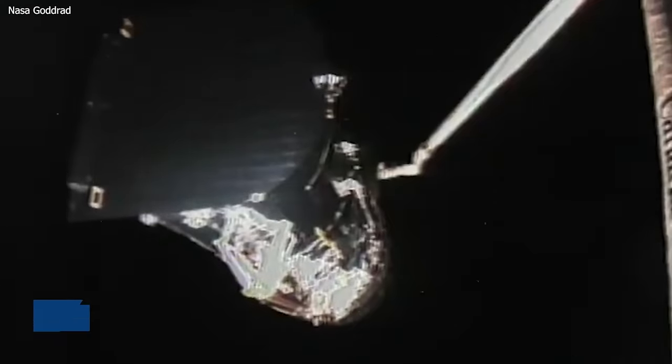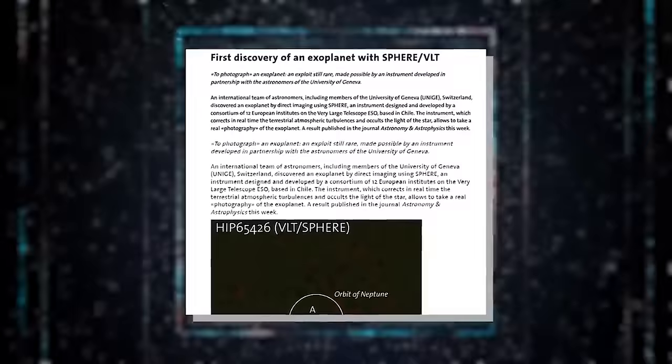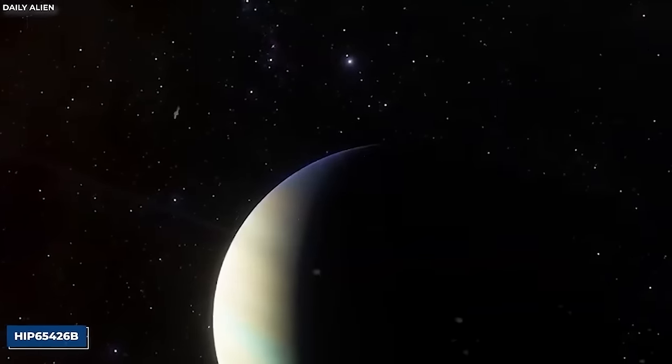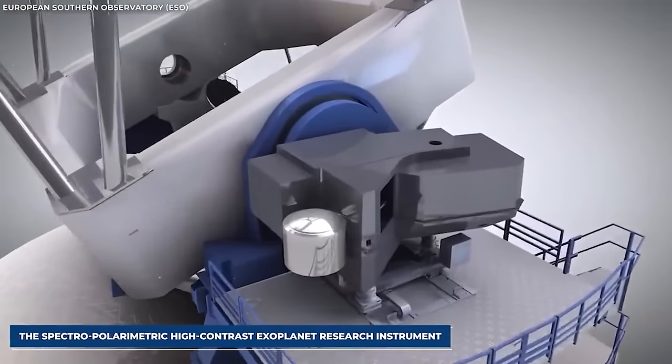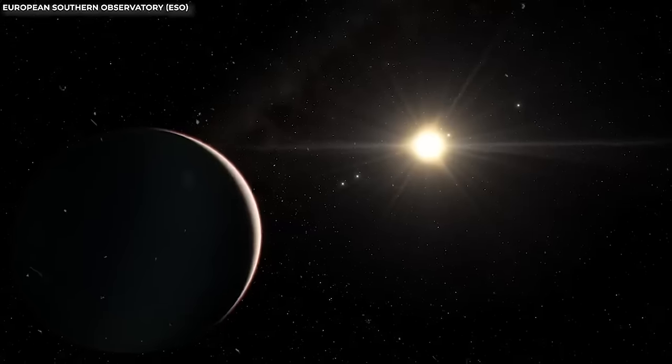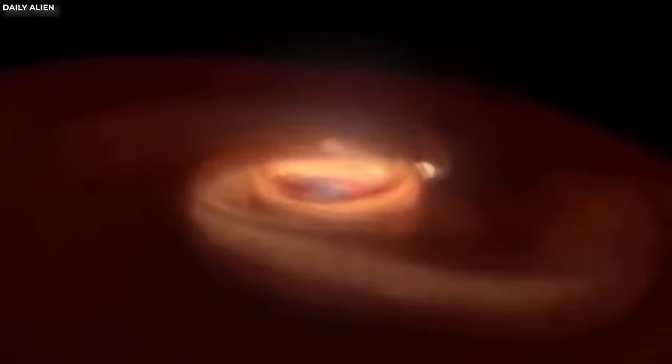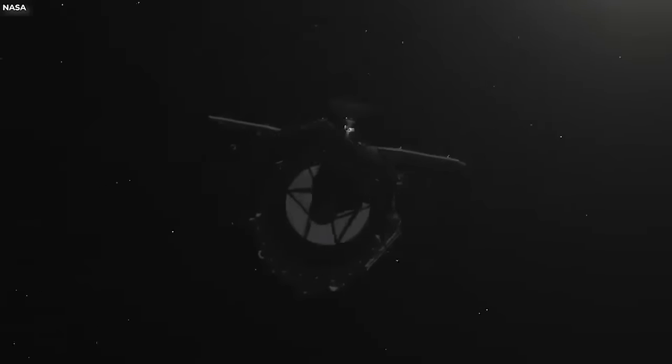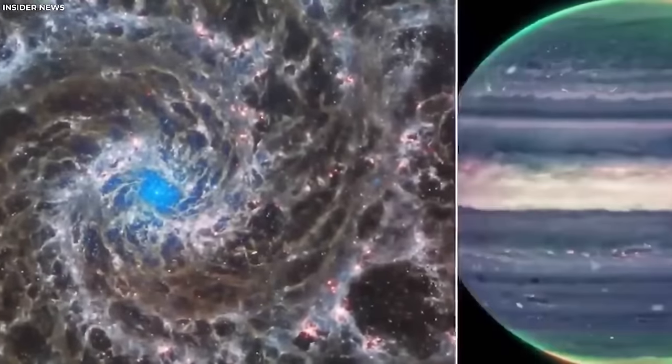In 2017, the SPHERE consortium made a significant discovery by identifying a planet called HIP 65426b using the spectropolarimetric high-contrast exoplanet research instrument. HIP 65426b is an exoplanet that orbits its host star, HIP 65426. In September 2022, it gained further attention as the first exoplanet to be directly observed by the James Webb Space Telescope. What makes this planet particularly intriguing is its unique characteristics combined with the remarkable sensitivity of the James Webb telescope, which allows for easier observation.